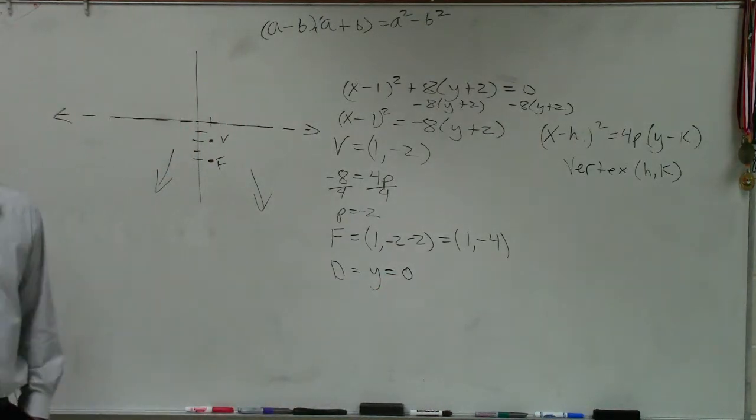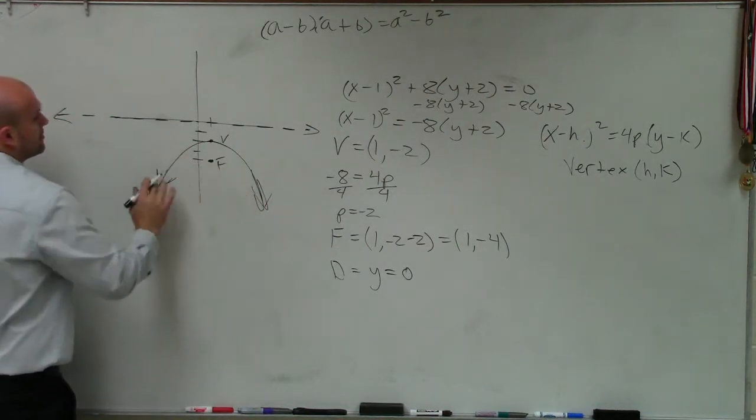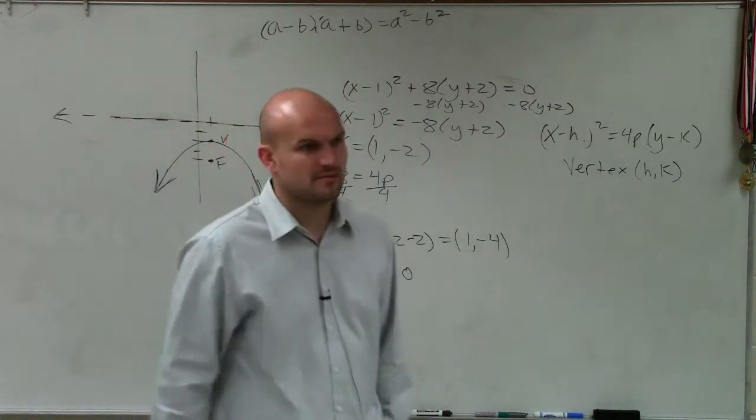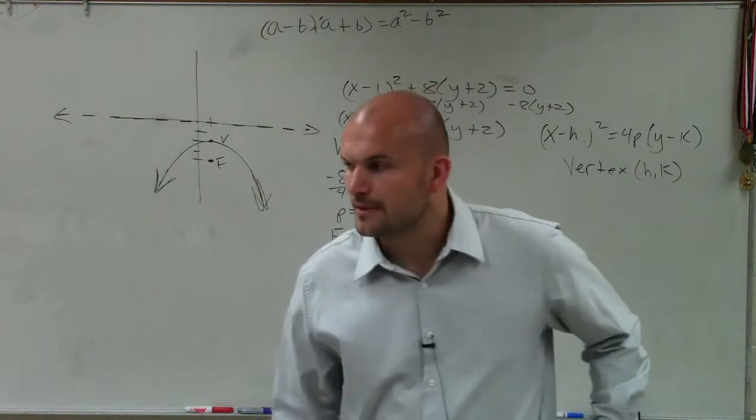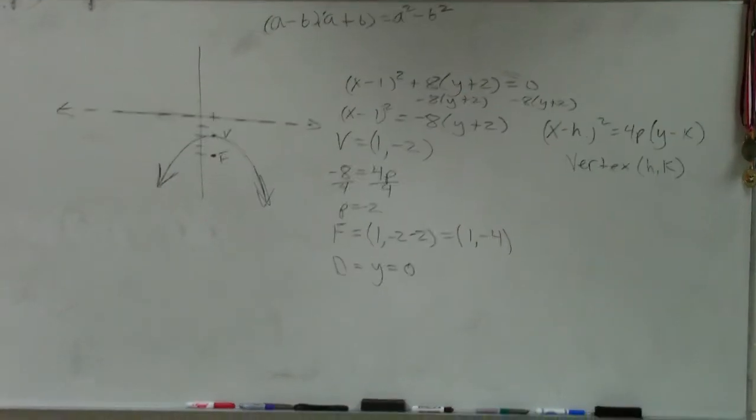Because you can add negative 2, or add 2 to negative 2. y equals 0. So therefore, my graph looks something like this, where there's the focus and there's the directrix. Does that make a little bit of sense on number 17? OK. Cool. Any other questions for this? Yes. Yes.